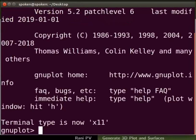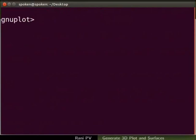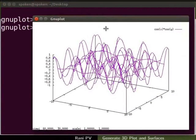I will also clear the screen. We will plot the function cos(x)*cos(y) to draw a surface. Enter the command splot cos(x) times cos(y). Make sure x and y are in parenthesis. The splot command generates 3D graph in the graphics window.